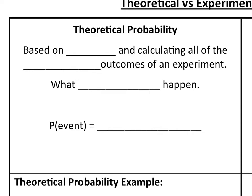Let's take a look at page 11. There are two types of probability: theoretical probability and experimental probability. First, we're going to look at theoretical probability.